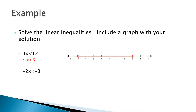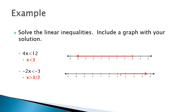Now try negative 2x is less than negative 3. Did you remember to reverse the inequality sign when you divided by negative 2? If you didn't, it will get you the wrong answer, so be careful. On a number line, we put our endpoint at approximately 3 halves (1 and 1 half), and we draw the arrow to the right. Notice we have the rounded parenthesis.